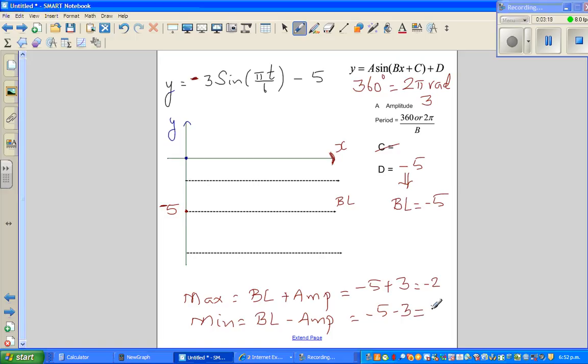Your minimum is baseline minus amplitude, so this will be minus 5 minus 3, which is minus 8. This is your minimum and this is your maximum which is minus 2.